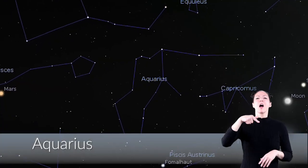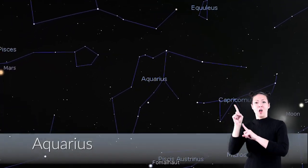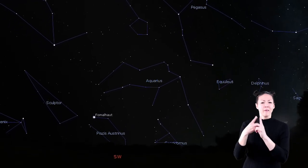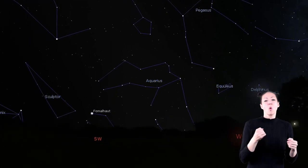Aquarius is another large constellation with stars that aren't very bright. During different months of the year, it is visible from either the southern or northern hemispheres.